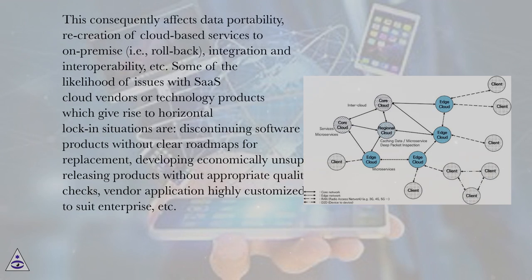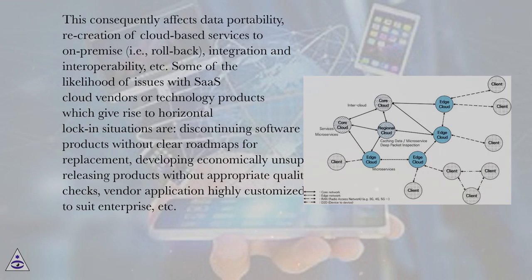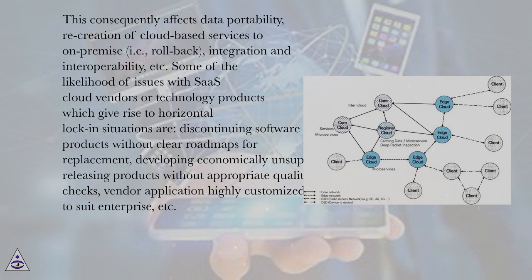This consequently affects data portability, recreation of cloud-based services to on-premise (i.e., rollback), integration and interoperability, etc. Some of the likelihood of issues with SaaS cloud vendors or technology products which give rise to horizontal lock-in situations are: discontinuing software products without clear roadmaps for replacement, developing economically unsupportable solutions, releasing products without appropriate quality checks, and vendor applications highly customized to suit enterprise, etc.